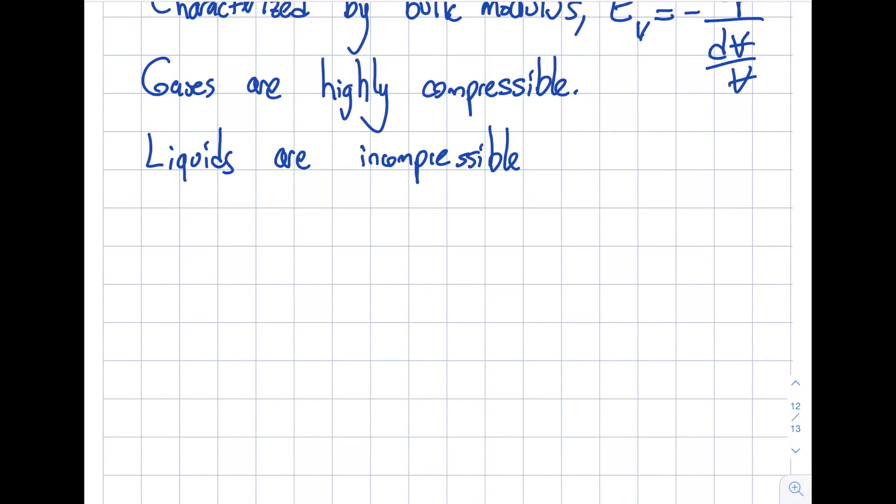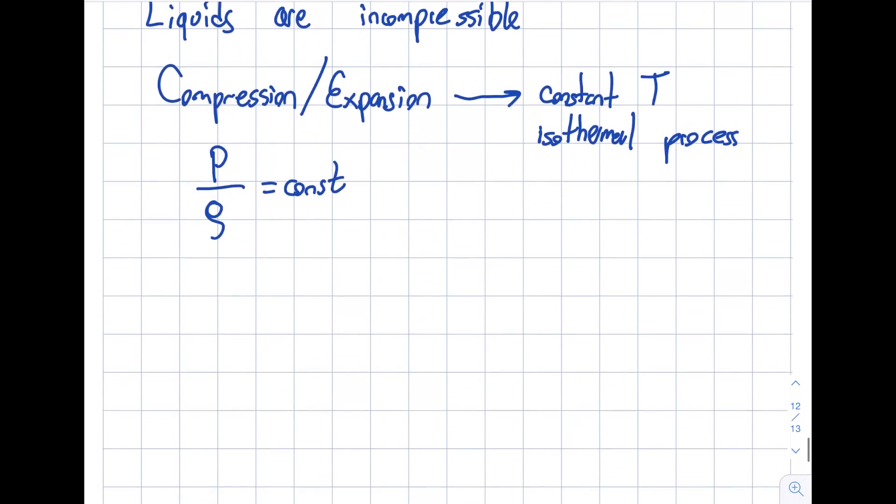For gases, let's look at how the compression or expansion takes place. Compression and expansion are reverse of each other. If this is taking place on the constant temperature, pressure is changing but the temperature is constant. If you remember from thermodynamics, these are called isothermal processes. What will happen is, from the ideal gas law or perfect gas law, you will find out that P over rho will be constant because P is equal to rho R T. T is constant, R is a constant anyways, so I get myself P over rho constant.